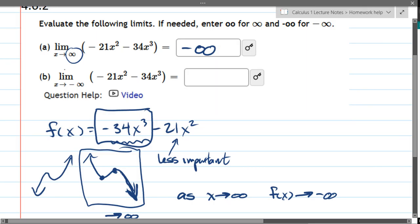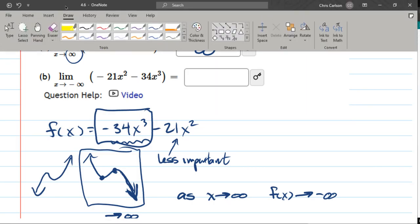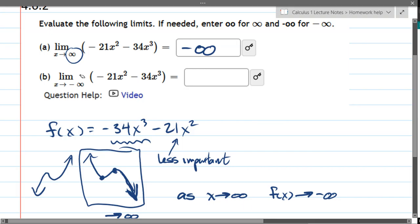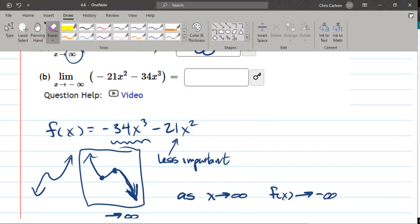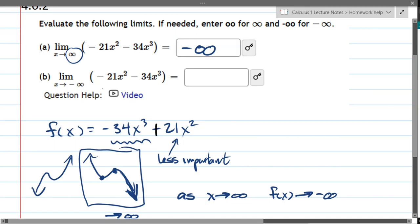One thing that would be a little bit more tricky in this question is if one of these was positive and one was negative. So, for example, if we had a plus instead of a minus, you'd have this one going to negative infinity, this one going to positive infinity. It looks like they might cancel each other out, but the less important term still comes into play, and so the x squared term wouldn't matter because the x cubed term is going to have a much stronger effect.